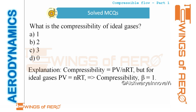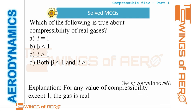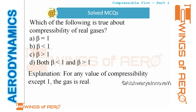MCQ 2: What is the compressibility for an ideal gas? For an ideal gas, beta equals 1. So the answer is option A. MCQ 3: Which of the following is true about the compressibility of a real gas? For an ideal gas beta = 1, for incompressible flow beta = 0, and for a real gas beta can be any value except 1. So the right answer is option D.